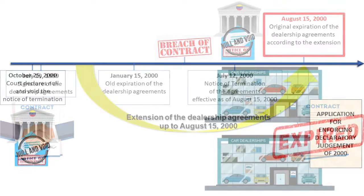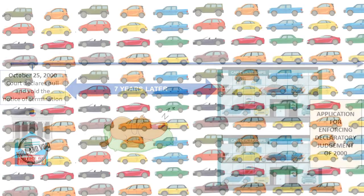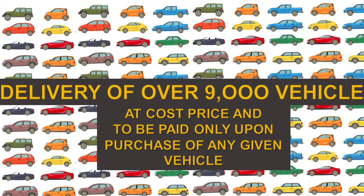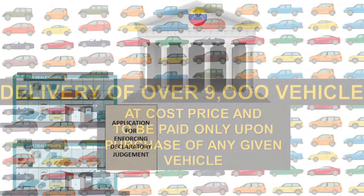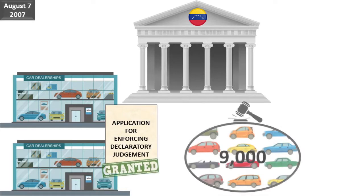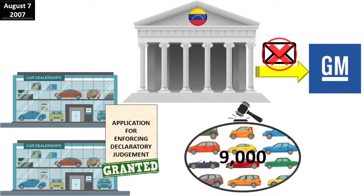After this court case had remained dormant for seven years, the two car dealerships purported to execute the court's ruling by requesting the delivery of over 9,000 vehicles from GM Venezuela, to be paid at cost price and only upon purchase of any given vehicle by the final customer. Despite that the 2000 court's ruling had merely declaratory effects — neither compensatory nor constitutive effects providing for new obligations — on August 7, 2007, the enforcement court issued an order giving effect to the car dealerships' request without even notifying GM Venezuela of the process, thereby depriving GM of the right to defend itself.